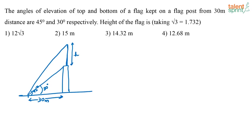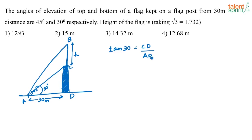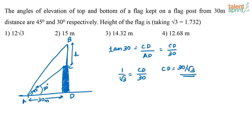Let us label these points A, B, C, D. Considering triangle ACD: tan 30 is equal to CD divided by AD, which is CD divided by 30. Since tan 30 is 1 by root 3, we get 1 by root 3 equals CD by 30, so CD equals 30 divided by root 3. This is just a post with no width, so don't get confused. So this length CD is now 30 divided by root 3.